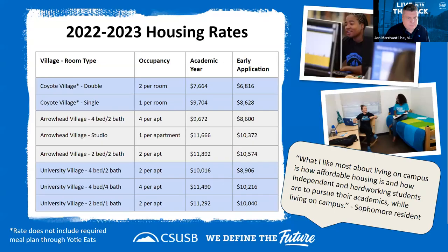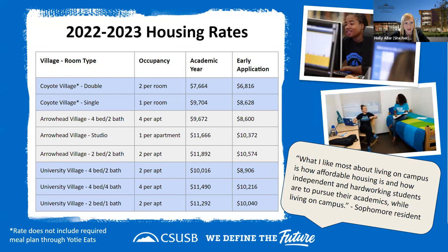Our housing rates are in detail on our website. We have different types of rooms across our villages — quite a few doubles in Coyote Village and fewer singles, so availability may vary. We also show the full academic year rate both with and without the early application discount, so it's really worth getting in early. If you're thinking about affordability, look at this information and start having conversations now about what living on campus might cost.